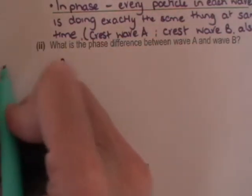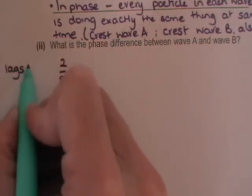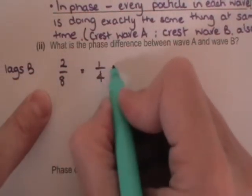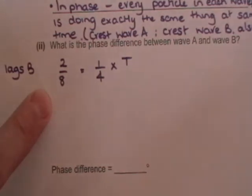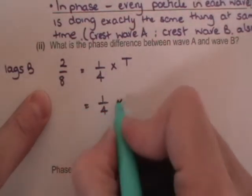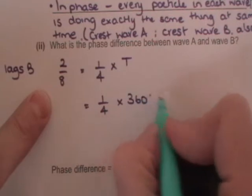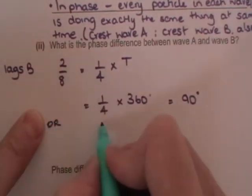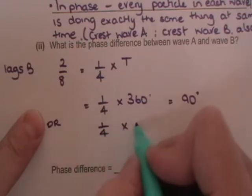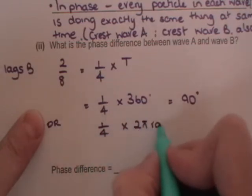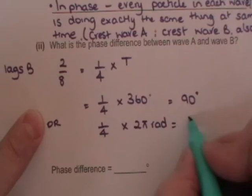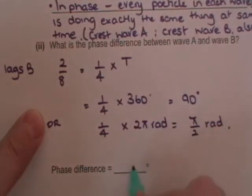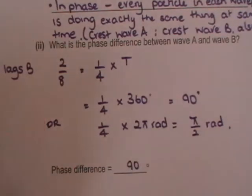So A lags B by 2 over 8, which is a quarter of a wavelength or a time period. And that's a quarter of either 360 degrees, which is 90 degrees, or a quarter of 2 pi radians which is equal to pi over 2 radians. Now the question is asking you there for your answer in degrees. So the answer is 90 degrees.